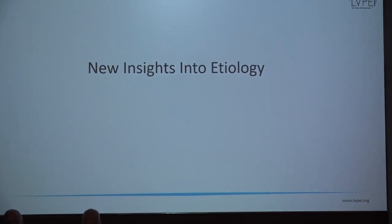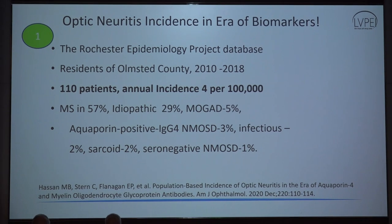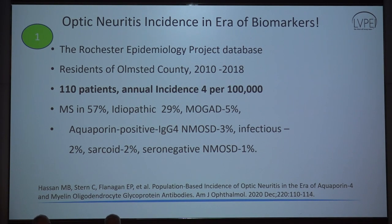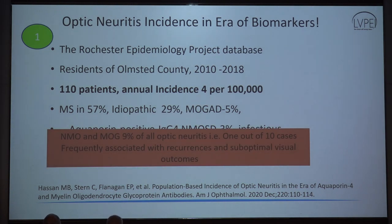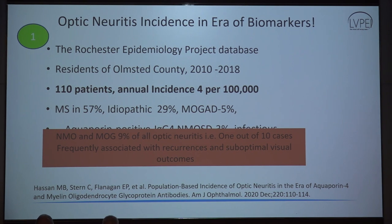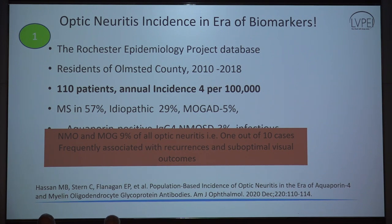What does the current literature tell us about etiology? This is a Western study from the Rochester group, where they looked at the population-based incidence of patients seen in a single center between 2010 to 2018, and found that the annual incidence was about 4 per 100,000. Majority of patients had multiple sclerosis as the final etiology, but about one-third was idiopathic. Fortunately, NMO and MOG accounted for only 9% of all cases, but 1 out of 10 cases can be associated with recurrences and suboptimal visual outcomes.